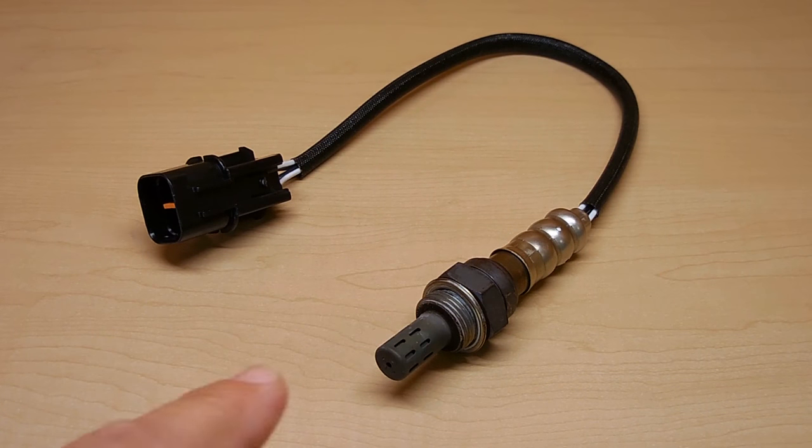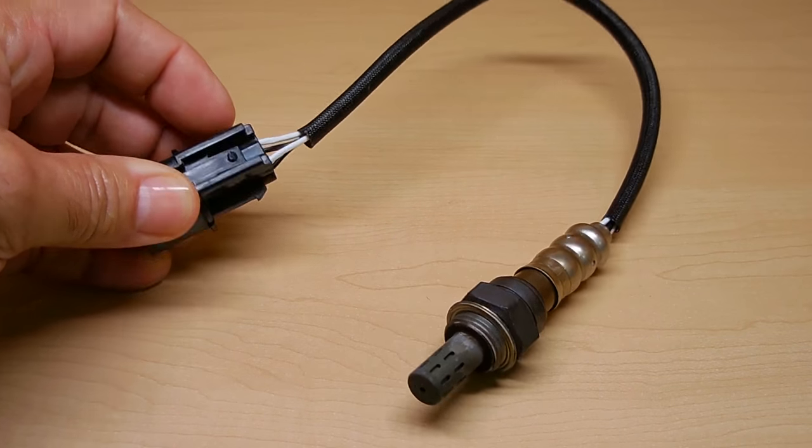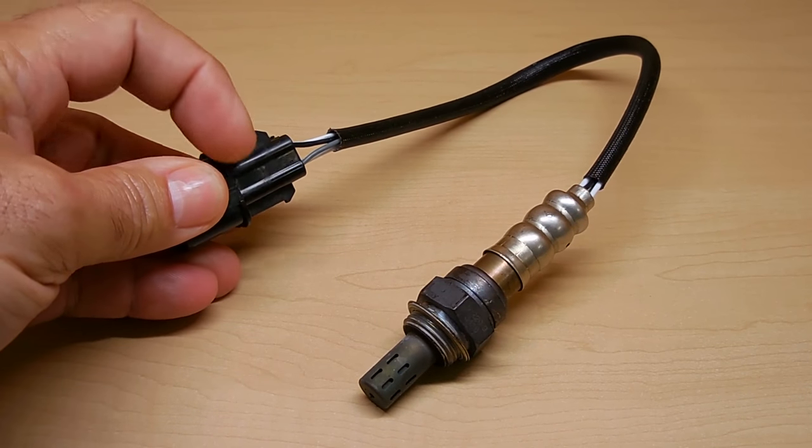So the first thing you're going to want to do is identify the heater wires in your oxygen sensor. Now, this one here, you can see the two white wires, and then I have a black wire, and then there is a gray wire.